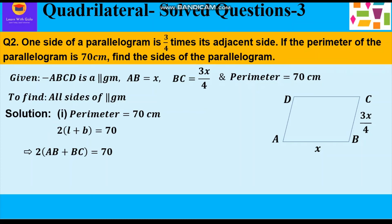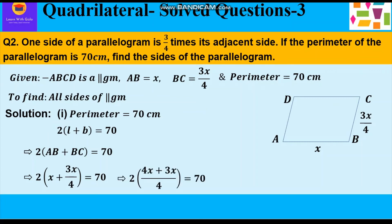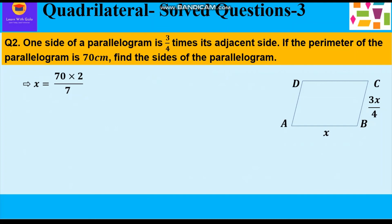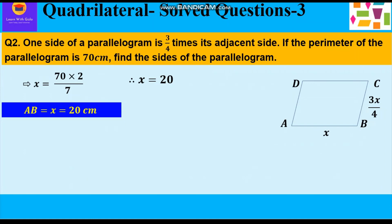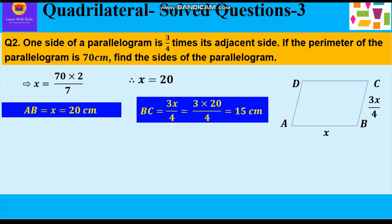So we write 2(AB + BC) = 70. Putting in values: 2(x + 3x/4) = 70. Taking LCM: 2 × (4x + 3x)/4 = 70, which gives 2 × 7x/4 = 70. The 2 and 4 cancel to give 7x/2 = 70. Cross multiplying: x = 70 × 2 ÷ 7 = 20. So when x = 20, AB = x = 20 cm and BC = 3x/4 = 3 × 20 ÷ 4 = 15 cm.